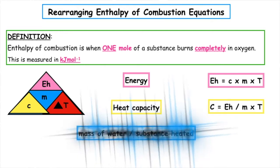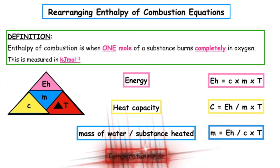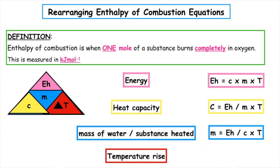The mass of water, or the mass of the substance which is heated in the copper can, can be calculated by the formula m is equal to E_h divided by C times T. And to work out the temperature rise, T is equal to E_h divided by C times m.